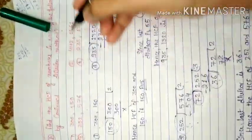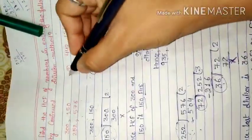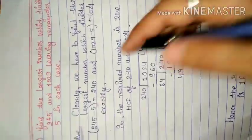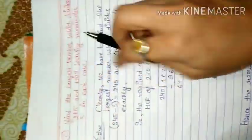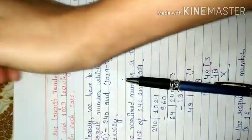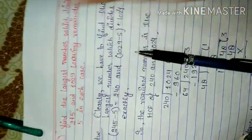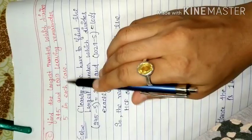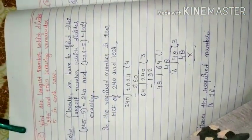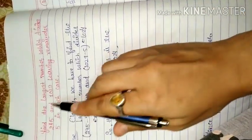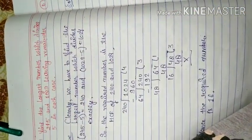This is the same for question number 2. You have to do 3 questions. I have done the last question. Check: find the largest number which divides 245 and 1029 leaving remainder 5 in each case.